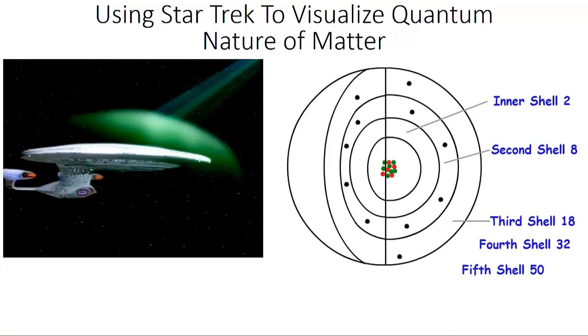The electrons move around in these energy shields, and it is energy that is smeared out in a probability shell, like the shield of the Enterprise, until it is measured, at which point we can know its location.